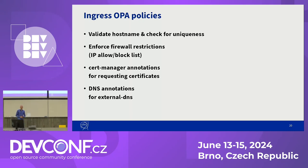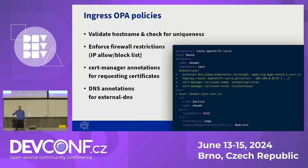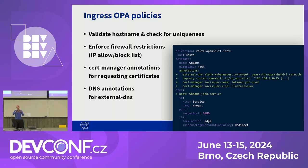We have various more OPA policies such as enforcing firewall restrictions for IP allow and block lists, adding annotations for cert-manager so that it requests certificates if necessary, and adding annotations for external-dns for our DNS setup. At the end, after all of these webhooks have passed, the route will look like this — we can see several more annotations for these components, and the hostname has been added that was generated on the fly. That is what I meant by using OPA as glue between different components — we can connect the ingress controller with external-dns, cert-manager, and various other things.